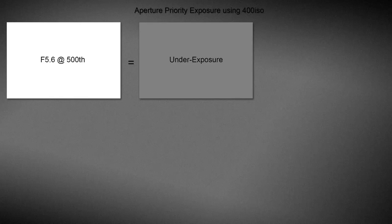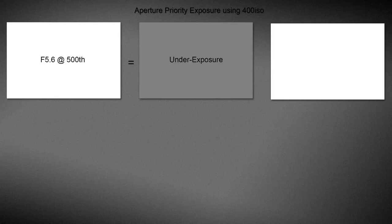We have a classic example of underexposure, and this is another graphic way to show there are times when we need to step in and compensate for the exposure the camera wants to give. To bring our grey underexposed card back to pure white on our computer, we needed to increase the exposure by two complete stops — doubling the exposure by slowing the shutter speed first from 0.05s to 0.25s, and then again to 0.125s. Now we have the white card recorded as white.